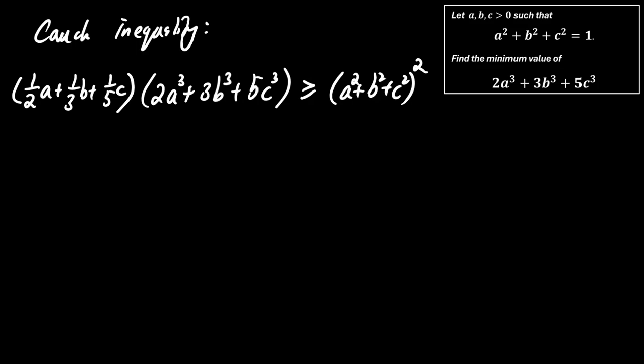To simplify things, let me define two expressions. Let J equal 1 half a plus 1 third b plus 1 fifth c. Let K equal 2a cubed plus 3b cubed plus 5c cubed.